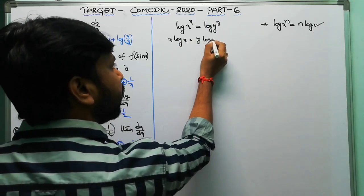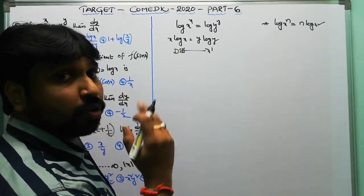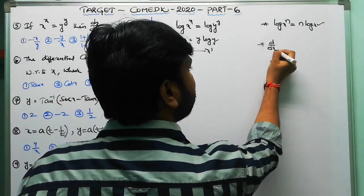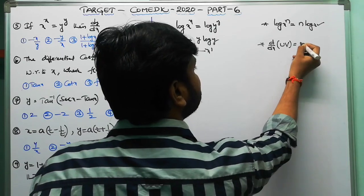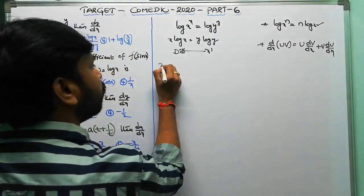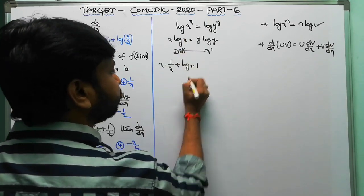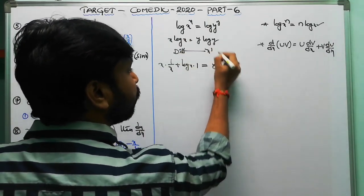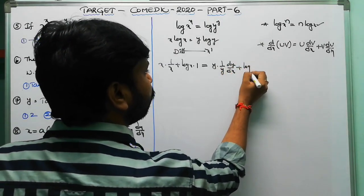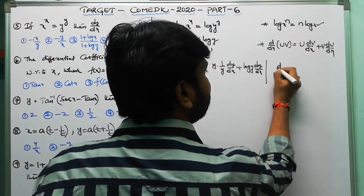Now differentiate both sides with respect to x. Applying the product rule d/dx(uv) = u·dv/dx + v·du/dx: left side gives x · (1/x) + log x · 1 equals 1 + log x. Right side gives y · (1/y) · dy/dx + log y · dy/dx, using the chain rule for log y giving (1/y)·dy/dx.